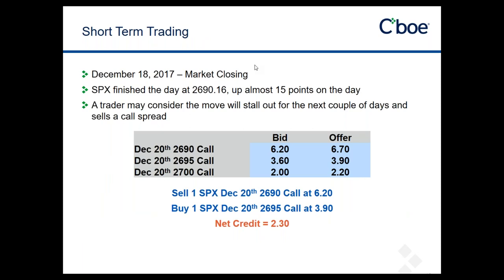Getting into some short-term trades from mid-late December and early 2018. These trades — normally when I write blogs or do webcasts, I discuss block trades I came across. But I actually created specific trades for this webcast. I took a look at the S&P 500 — it was up 15 points on December 18th — and decided that we have an outlook that the move is overdone and might stall out over the next couple of days. One of my favorite trades in that case is to sell a call spread.